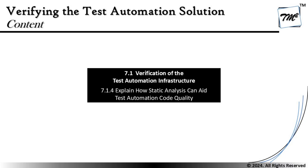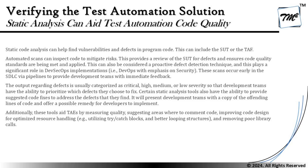Moving on to the next segment — 7.1.4 — explaining how static analysis can aid test automation code quality. Static analysis is an activity that helps conduct code reviews, which is a critical task in the lifecycle. It helps identify coding-related anomalies, and maintainability can be easily analyzed with the help of this tool. Let's get into how static analysis tools can help us do the same.